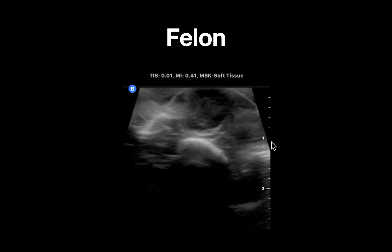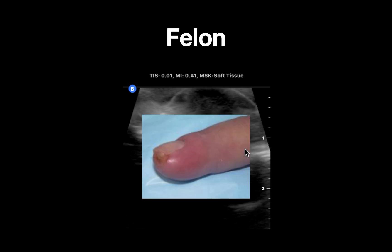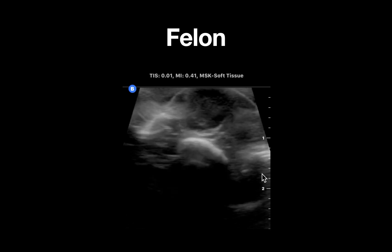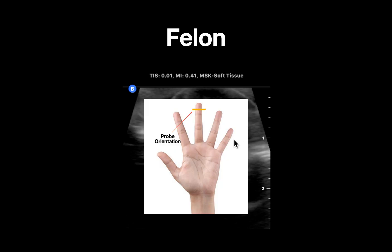This is an ultrasound clip demonstrating a small distal fingertip abscess, also known as a felon, in a patient presenting with a painful and red fingertip. A linear preset is used as delineated by the shape of the footprint at the top of the screen. The probe is placed in a transverse orientation over the palmar aspect of the digit distal to the DIP joint.